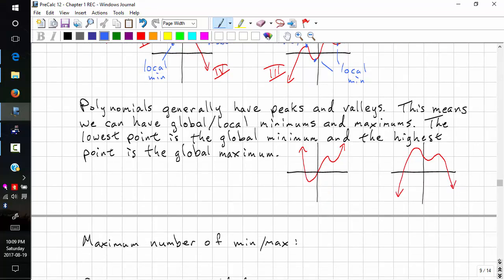Polynomials generally have peaks and valleys, also call them hills and valleys. This means they can have global and local minimums and maximums. The lowest point is the global minimum, and the highest point is the global maximum.